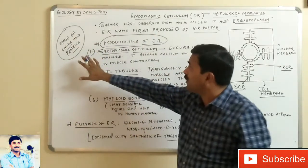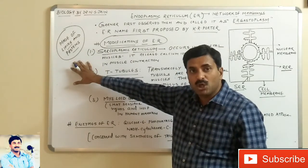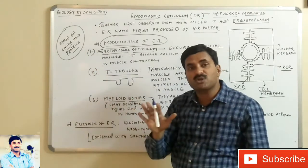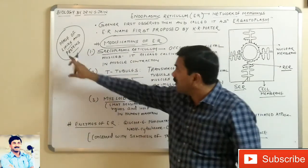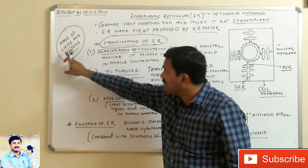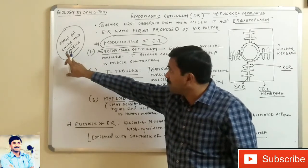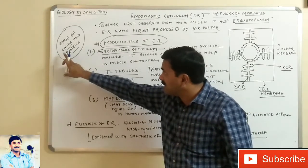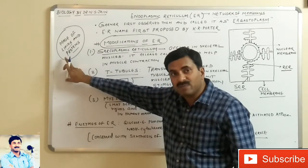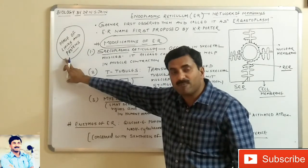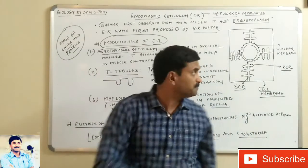The name endoplasmic reticulum was proposed by scientist K.R. Porter. Regarding the chemical composition of the endoplasmic reticulum, it is composed of two major components: lipids and proteins. The percentage of lipid is greater than the percentage of protein in the endoplasmic reticulum.